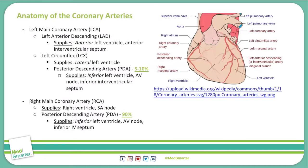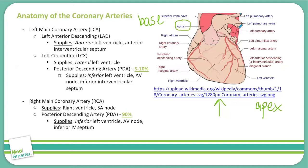Let's begin our discussion by orienting ourselves to the diagram. This is an interior view of the heart, meaning you've got the apex over here and the base on this side. One thing you'll notice right off the bat is that the coronary arteries branch off of the aorta. They're divided into two main divisions: the left main coronary artery, or LCA, and the right main coronary artery, or the RCA.